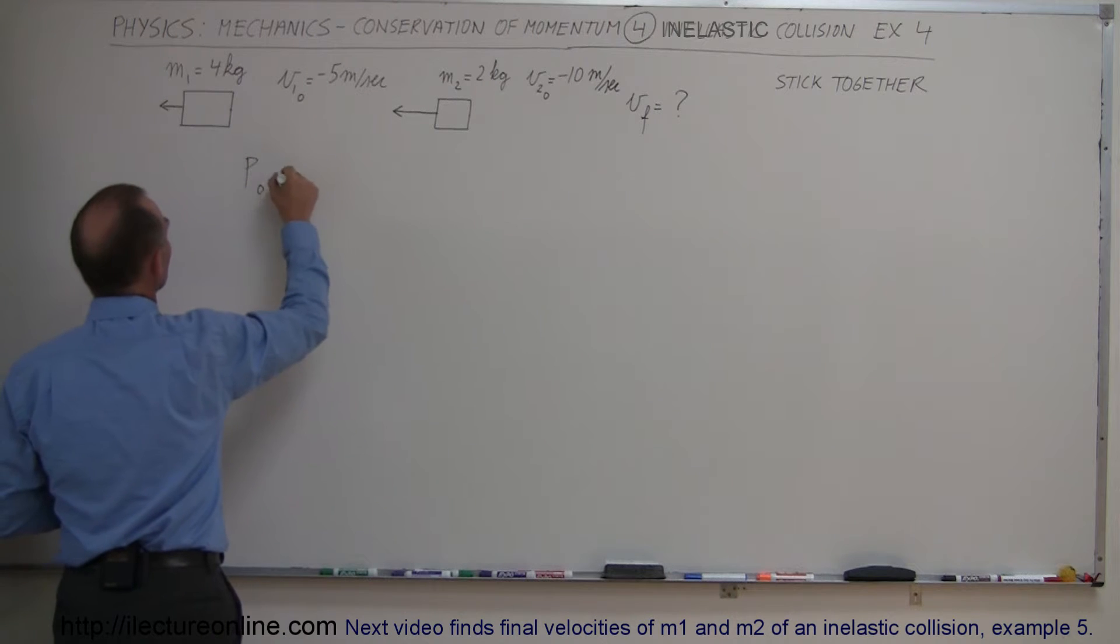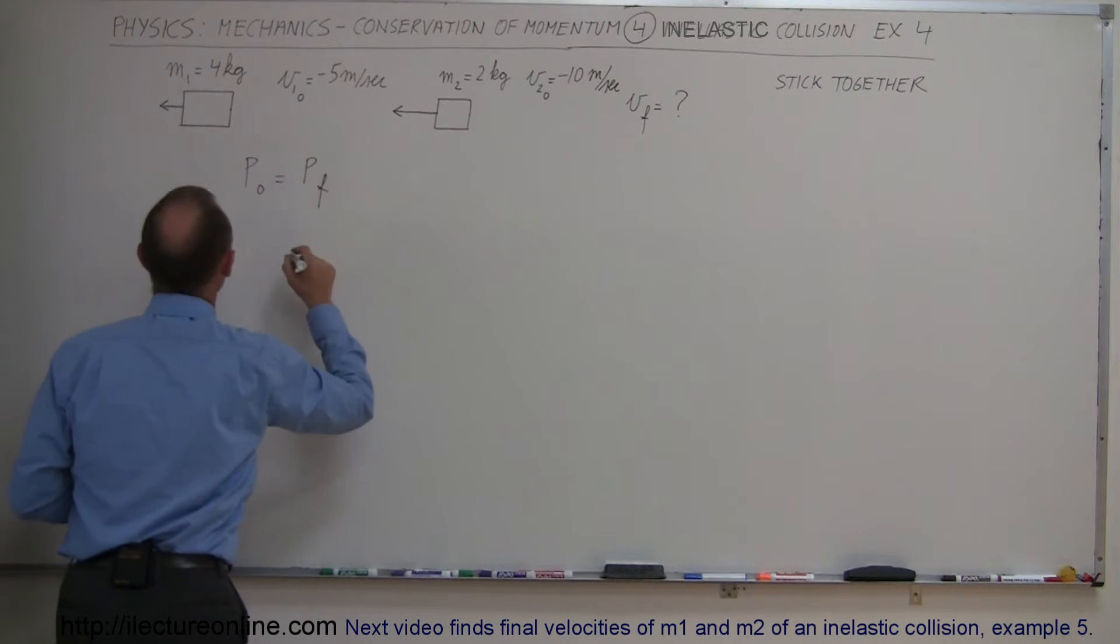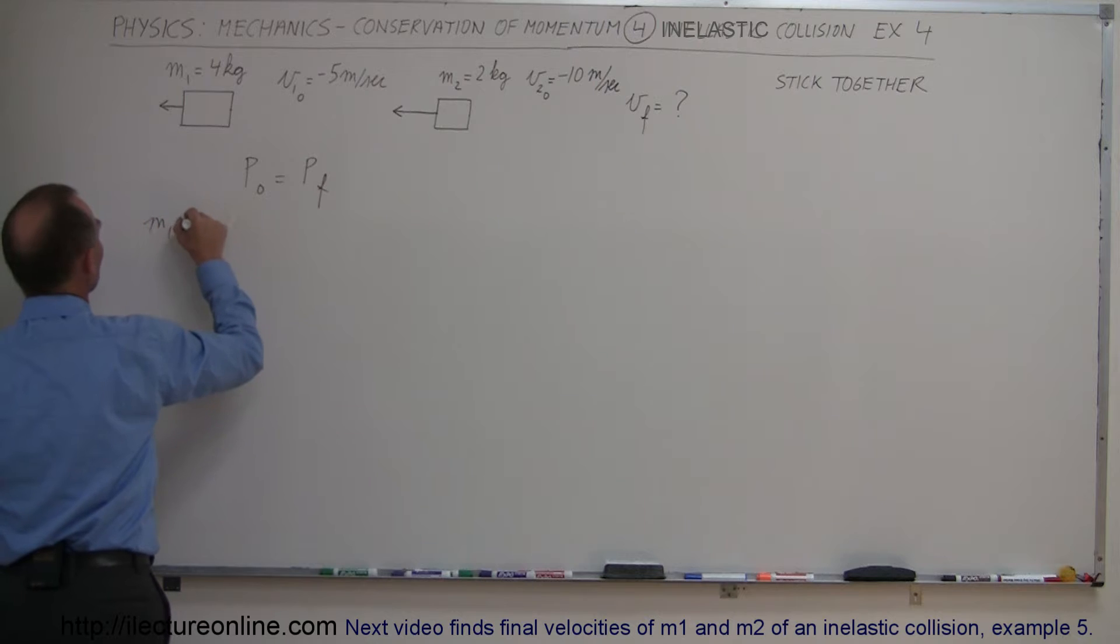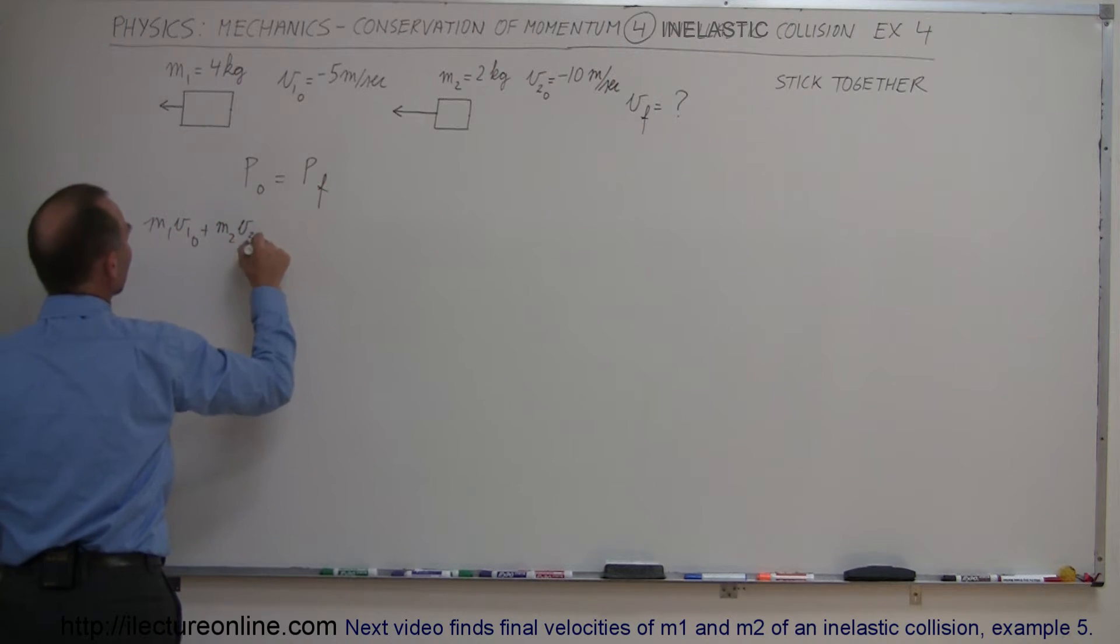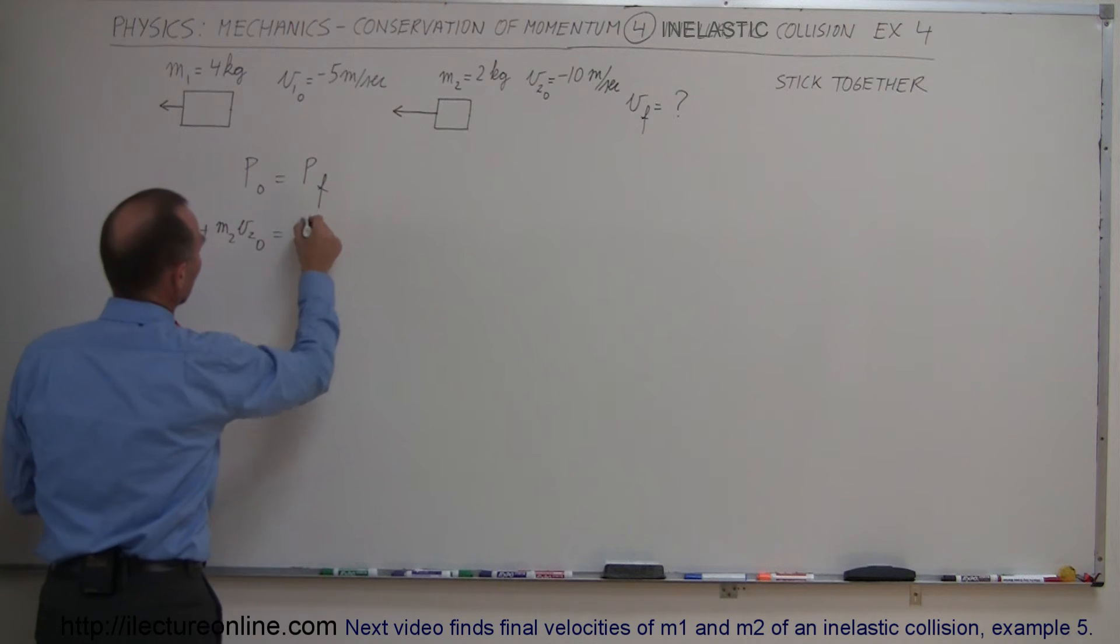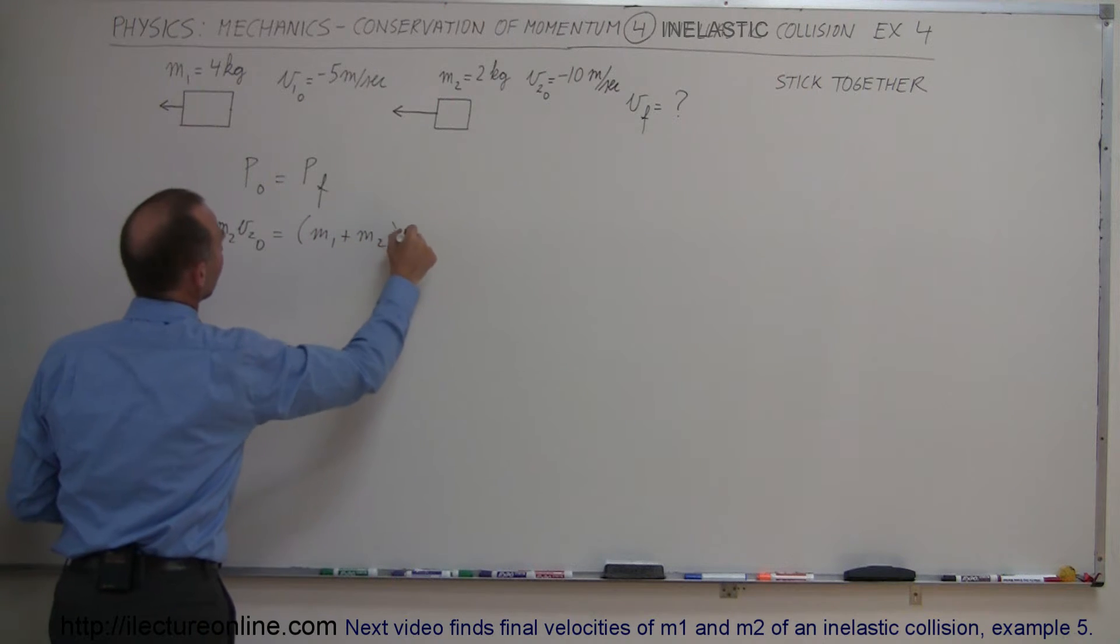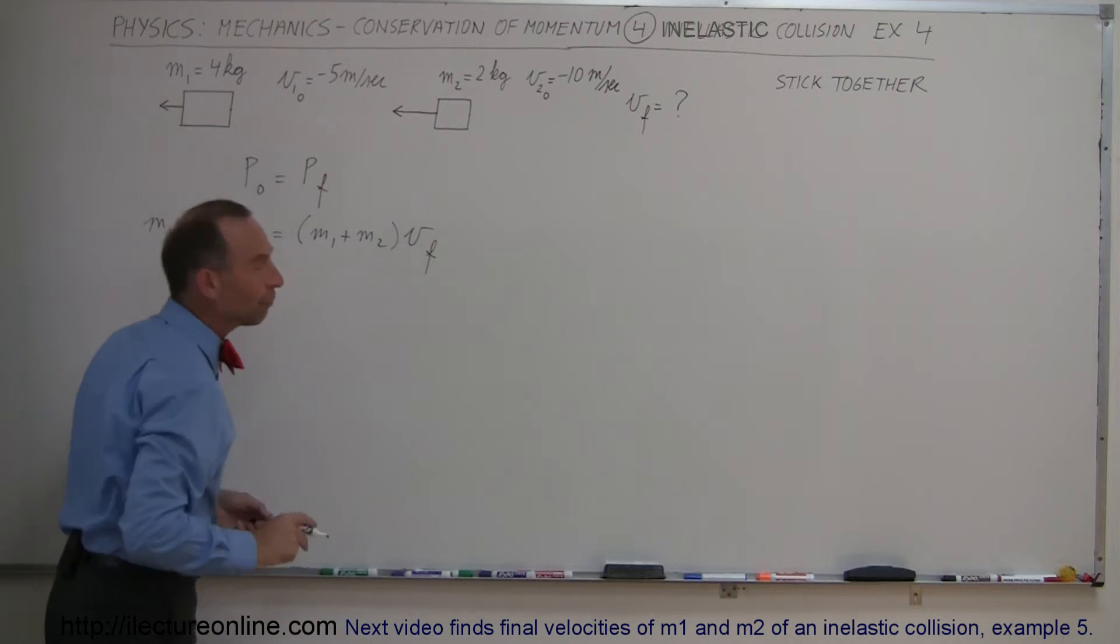We have momentum initial equals momentum final and we get m1 v1 initial plus m2 v2 initial equals, and since they stick together we write m1 plus m2 times v final which is what we're looking for.